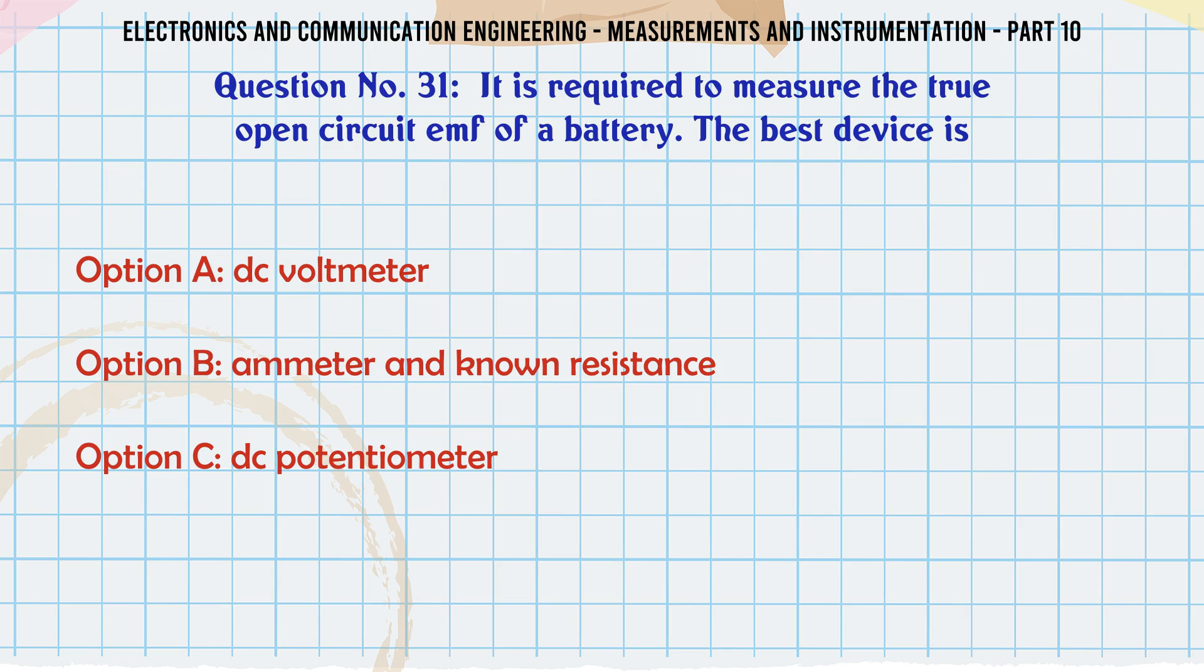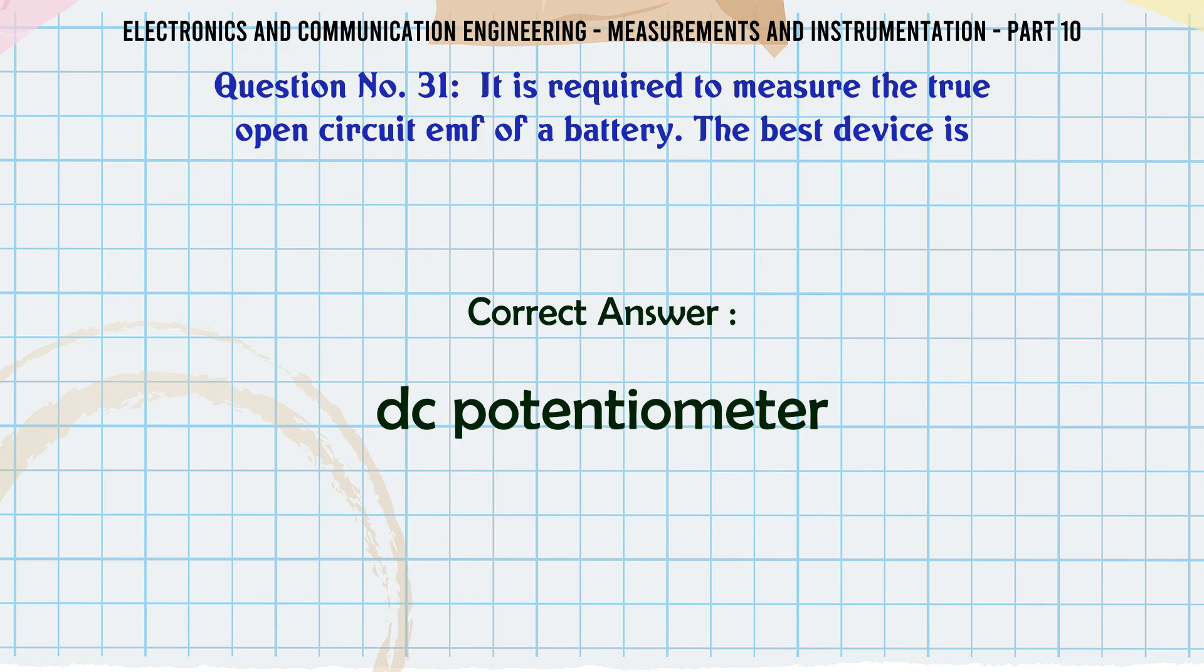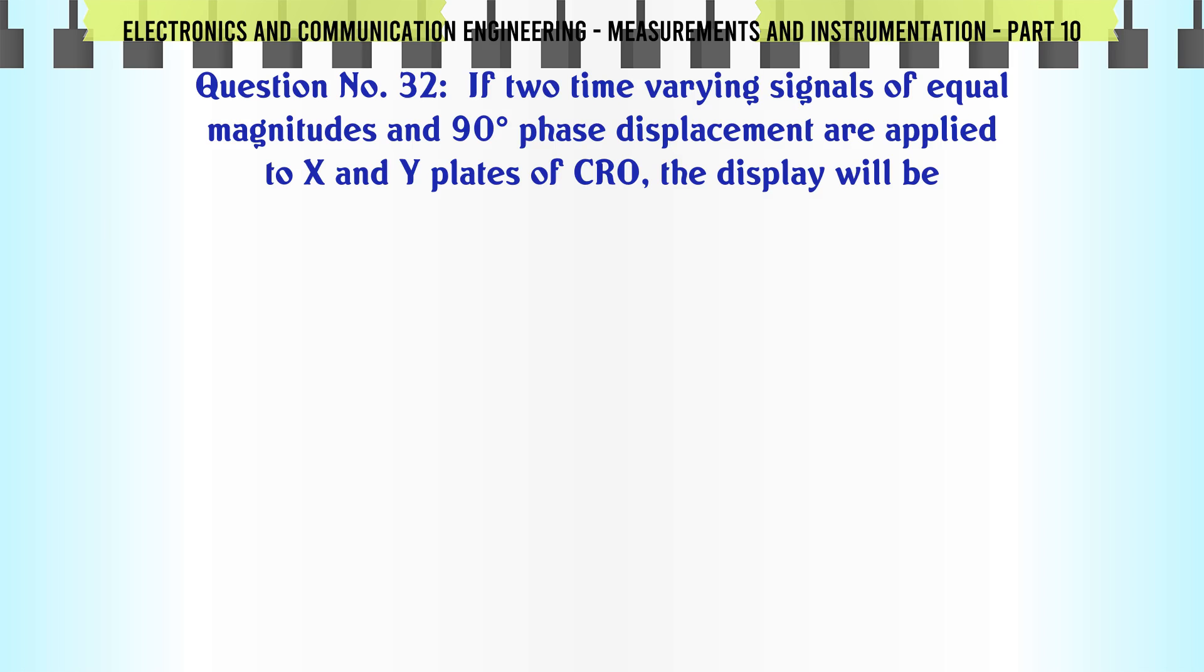It is required to measure the true open circuit EMF of a battery. The best device is: A) DC voltmeter, B) ammeter and known resistance, C) DC potentiometer, D) either A or C. The correct answer is DC potentiometer.